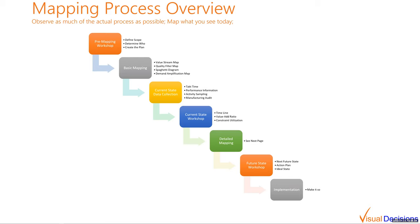Once the analysis of the current state is completed, it's time for the future state workshop. The team gathers to go through current state analysis, brainstorm ideas, document planned improvements, and create the action plan. There should always be a next future state map documenting immediate goals — what immediate improvements and waste removal are targeted. Optionally, the team may also produce an ideal future state map where all possible waste is removed. Either way, the team creates a detailed project plan for executing improvements.